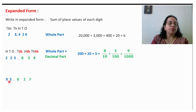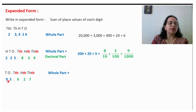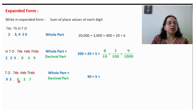Take the example 95.027. First write down the places. For the whole part: 90 plus 5. Now for the decimal part: 0 upon 10, plus 2 upon 100, plus 7 upon 1000.